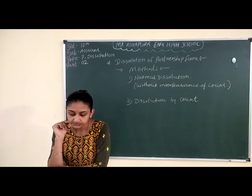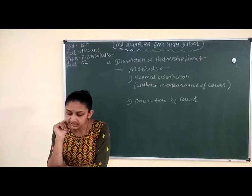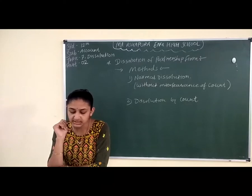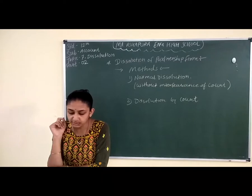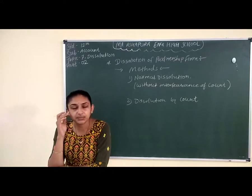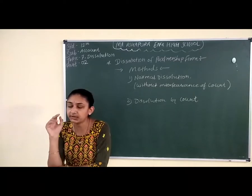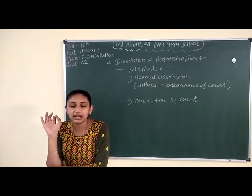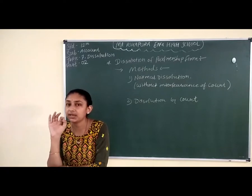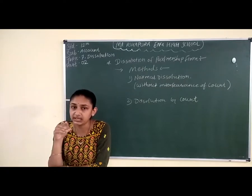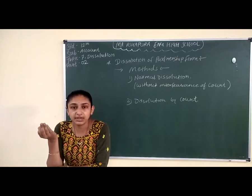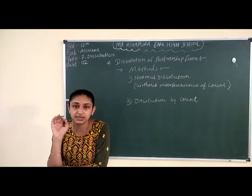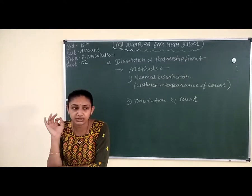Third is dissolution as per act. In the following conditions there is compulsory dissolution by the act. First is when all partners of the firm become insolvent, or except one, all partners become insolvent. अगर suppose तीन partners हैं उसमें से दो partners insolvent हो जाते हैं — यानि कि अब उनके पास कोई भी payment करने की ability नहीं है, वो अपनी liabilities pay नहीं कर सकते — तो ऐसी condition में dissolution of firm होता है, यानि कि firm close हो जाता है।